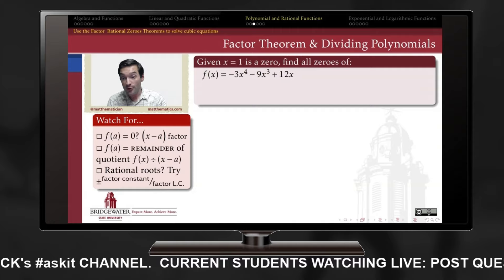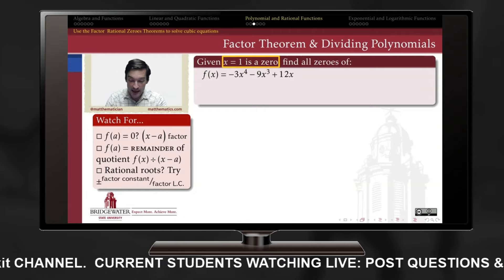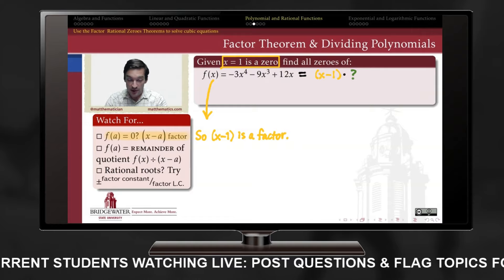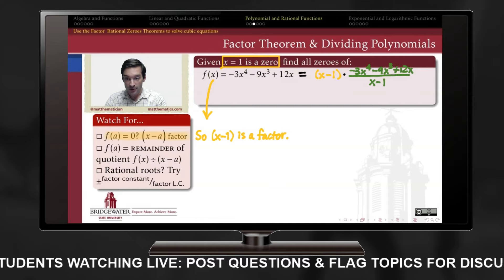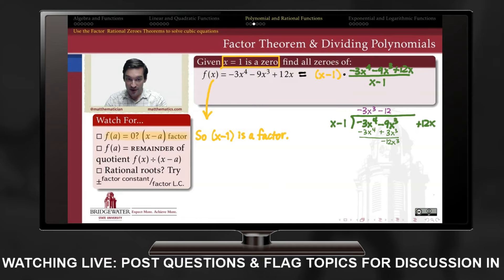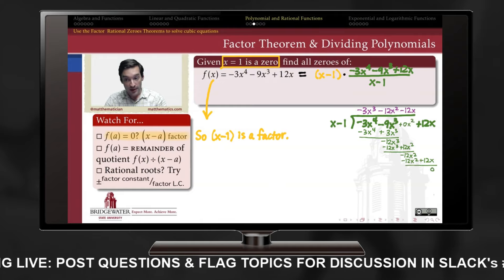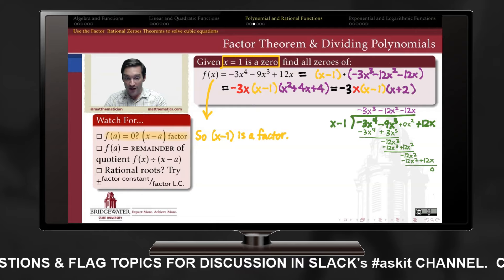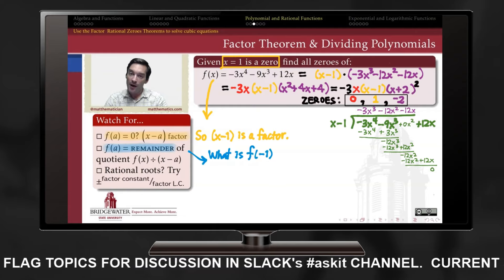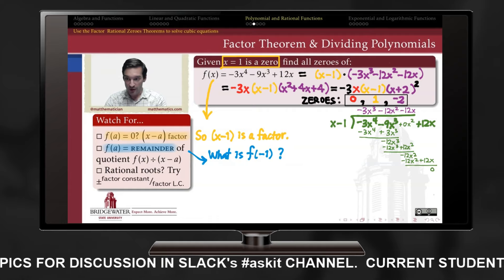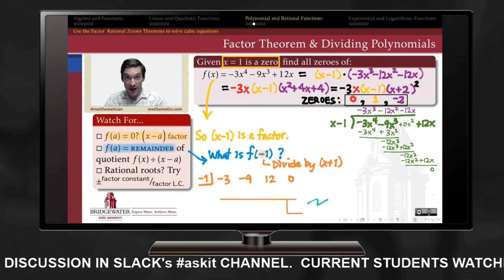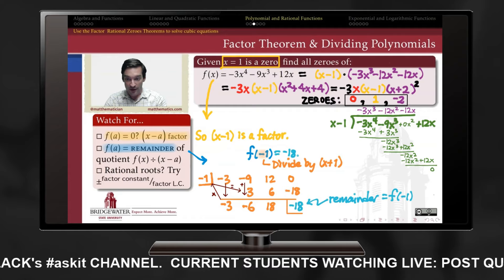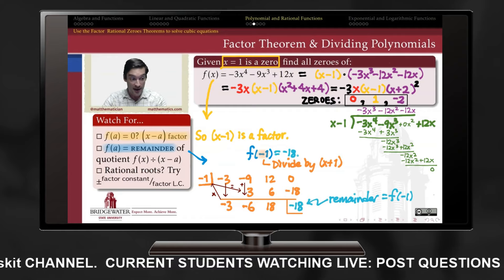For polynomials, known zeros give factors, and polynomial division is a strategy to find quotient factors and continue factoring until the polynomial is completely factored. Polynomial division can also evaluate a polynomial function: to evaluate f at x equals a, divide f by (x-a) and take the remainder — that remainder equals f of a, and in some cases this is faster than direct substitution.